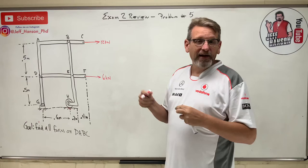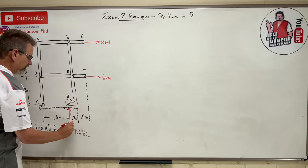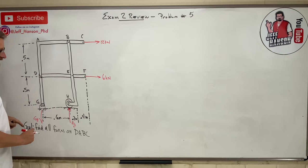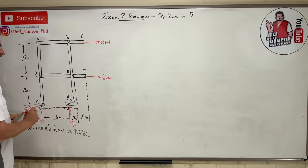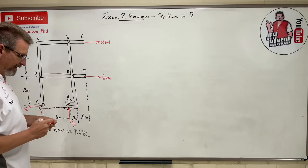So the first step is to find global equilibrium. I have a roller, which gives me Hy. The whole system wants to rotate, so the ground is pulling downward, giving Gy. The up forces equal the down forces. All the horizontal forces go one way, so Gx has to go the other way. I already know Gx because it's the only force in the x-direction — it has to equal those two loads, so Gx equals 18 kilonewtons.